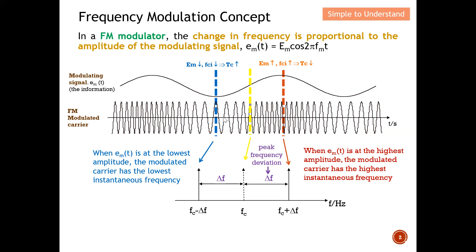From the frequency diagram, you can see that when the amplitude of the modulating signal is at the lowest, it has the lowest frequency. When the amplitude is at the highest, the frequency is also the highest — occupying the extreme right of the diagram with the highest frequency component. So when we reach the lowest amplitude point, I show you a very low frequency, and the arrow shifts indicating the amplitude of the modulating signal.